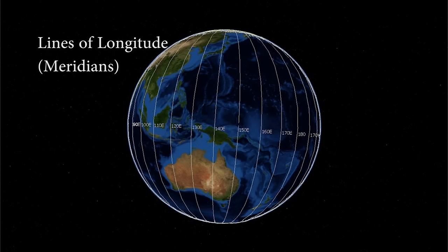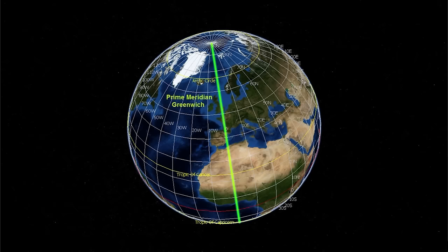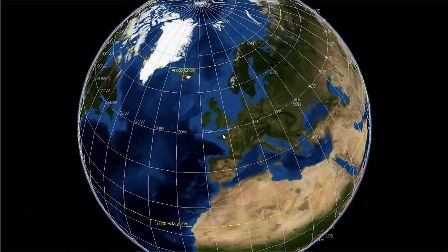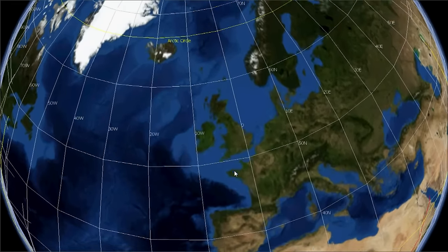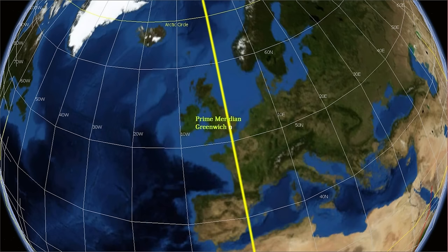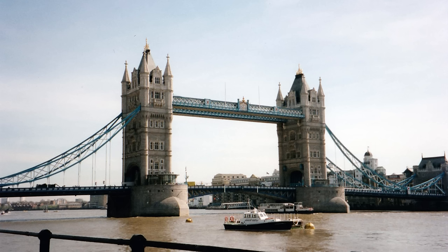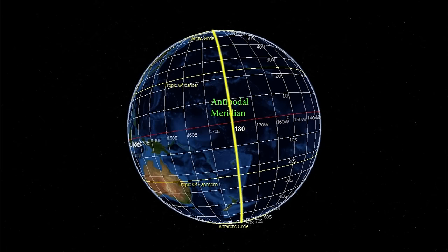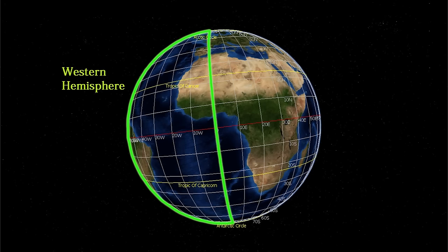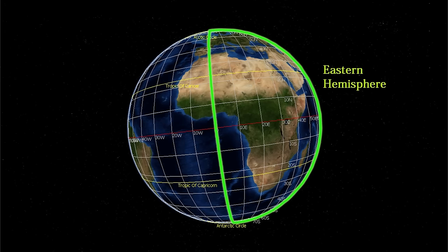Lines of longitude are also known as meridians. The starting point for reading longitude is the Prime Meridian, which is a line passing near the Royal Observatory in Greenwich near London in the United Kingdom. This site was chosen as the International Zero Longitude Reference Line by an international conference in 1884. The antipodal meridian of Greenwich is both 180 degrees west and 180 degrees east. West of the Prime Meridian is the Western Hemisphere; east of the Prime Meridian is the Eastern Hemisphere.